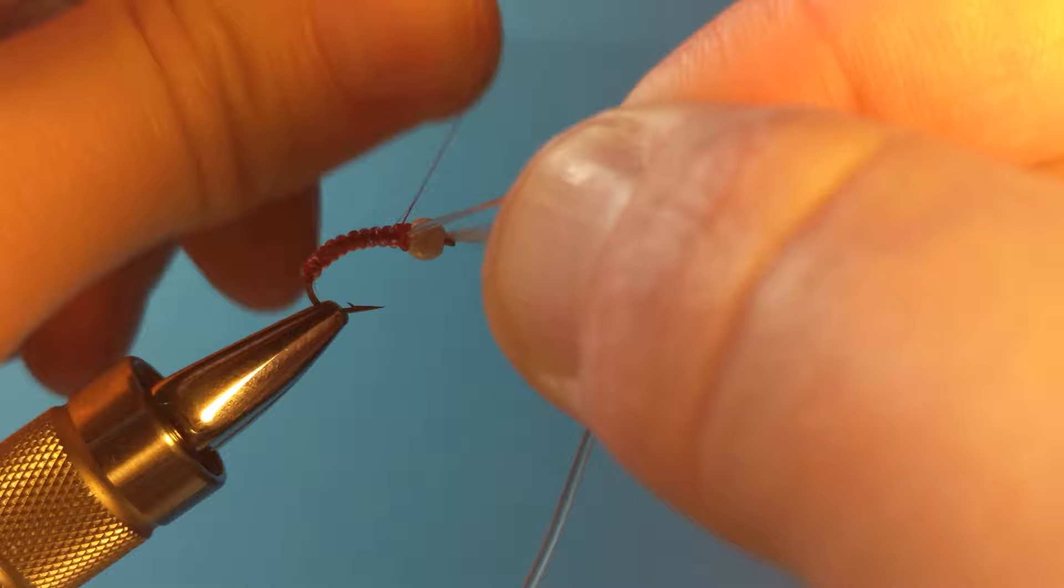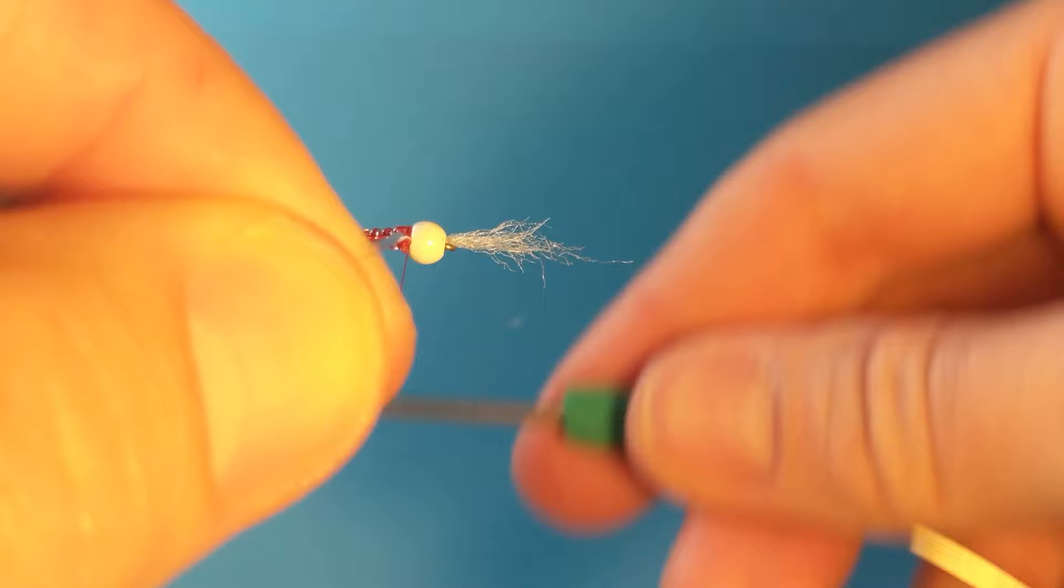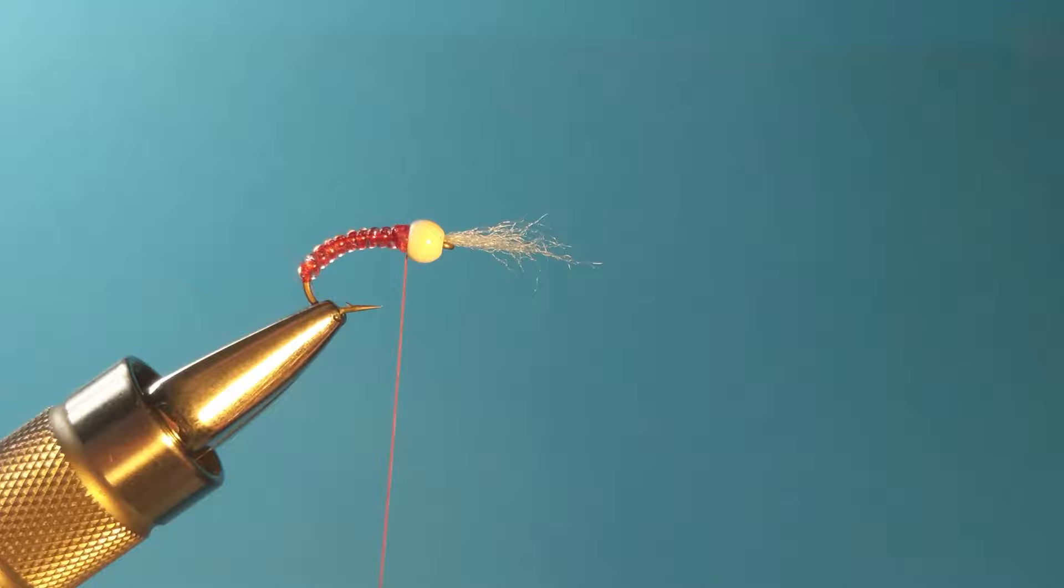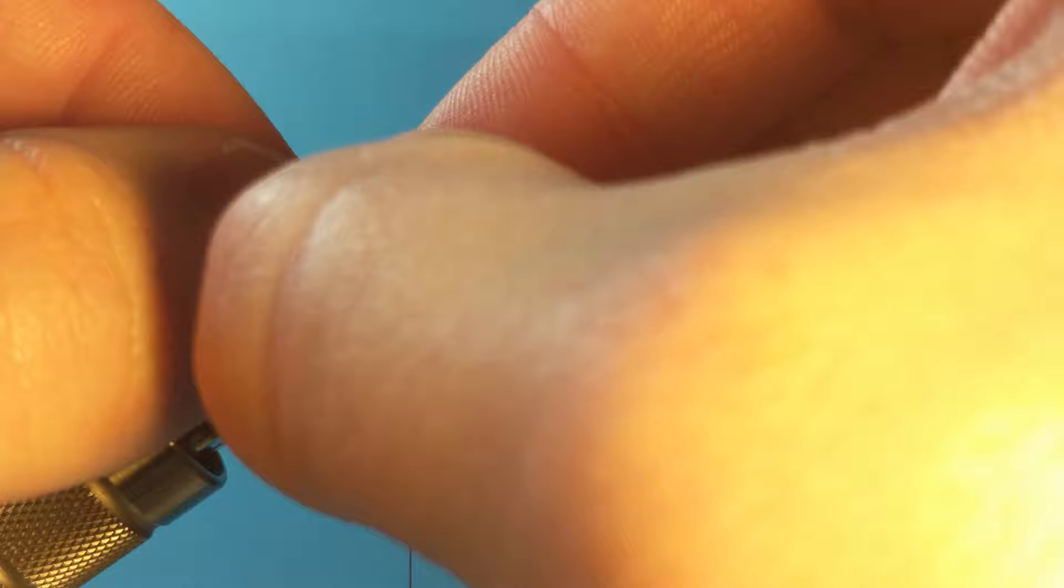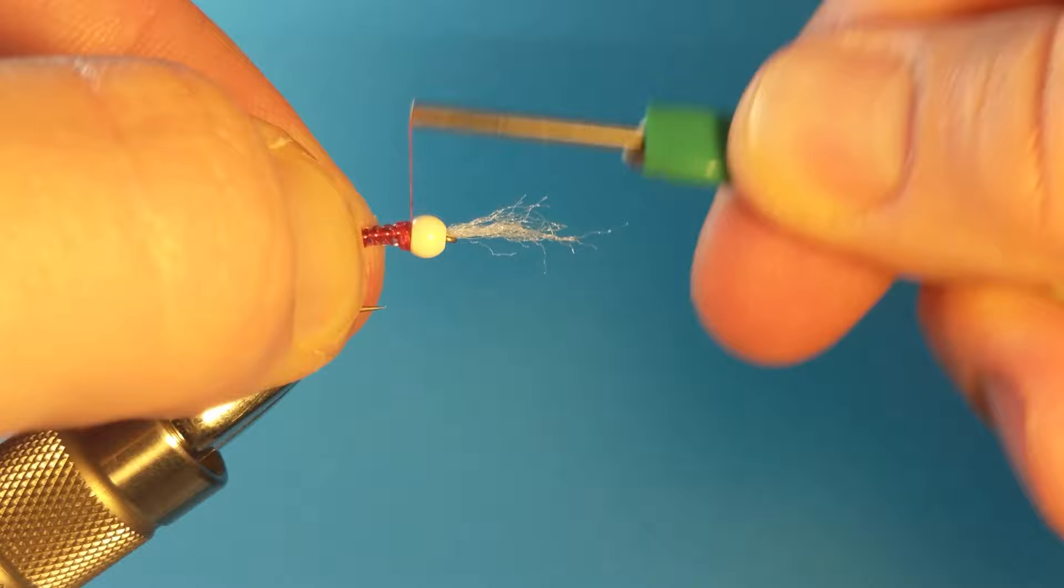Do a couple wraps in front of it. And then we can pull it tight. And snip it off close. You can use your thumb to kind of squish that down a little bit. Works great. And now I'm just going to do a couple cementing wraps here. And then whip finish.